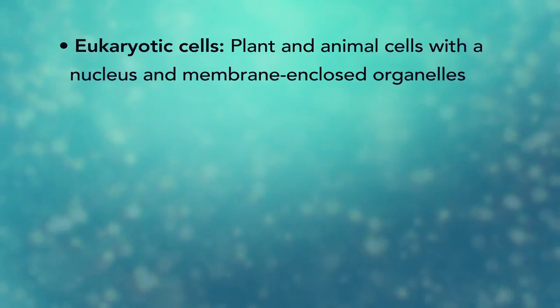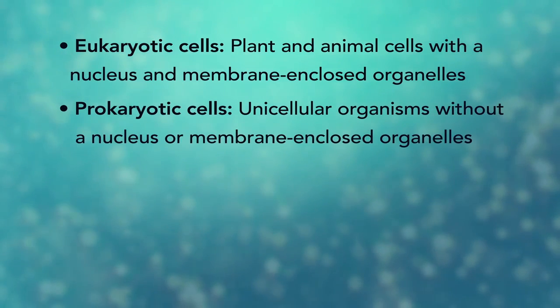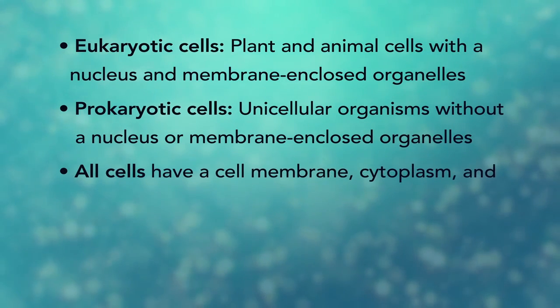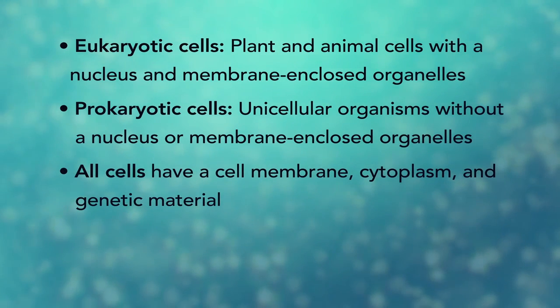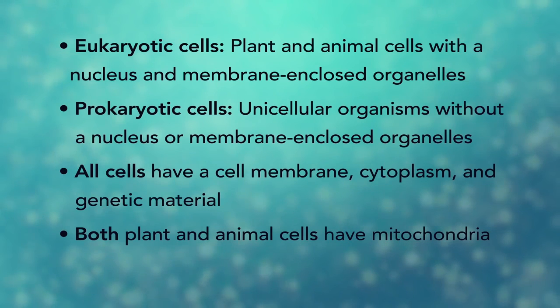In summary, remember, eukaryotic cells are plant and animal cells with a nucleus and membrane-enclosed organelles, while prokaryotic cells are unicellular organisms without these things. All cells have a cell membrane, cytoplasm, and genetic material. And even though only plant cells have chloroplasts, both plant and animal cells have mitochondria.